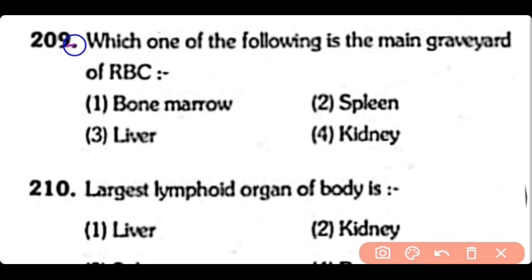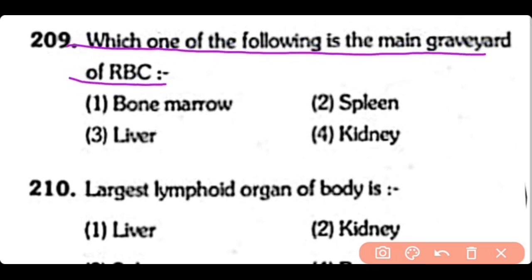Q209. Which one of the following is the main graveyard of red blood cells — bone marrow, spleen, liver, or kidney? The correct answer is Option 2 — the spleen.